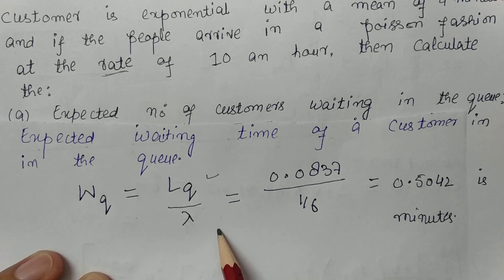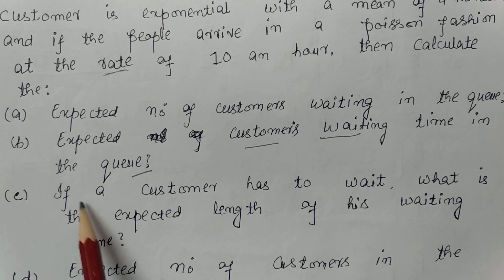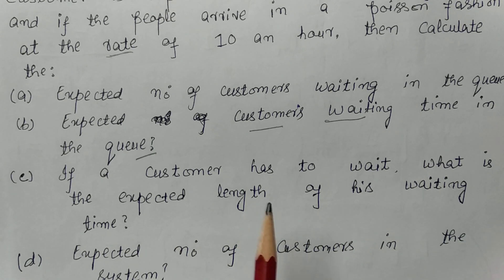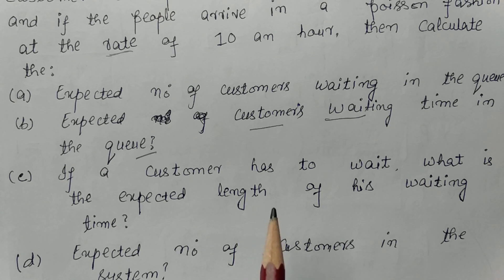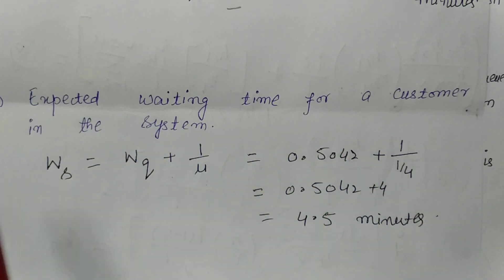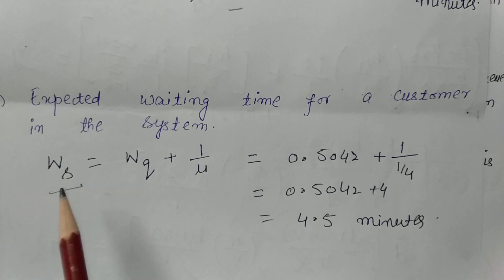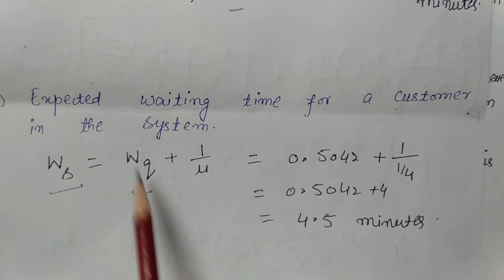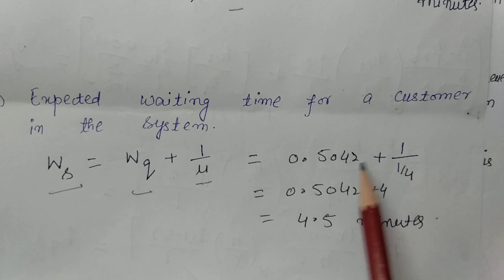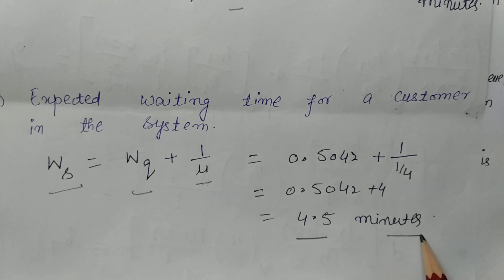Next part: if a customer has to wait, what is the expected length of his waiting time? This means we find the expected waiting time in the system. W equals Wq plus 1/μ equals 0.5042 plus 1/(1/4) equals 0.5042 plus 4, giving W equals 4.5042 ≈ 4.5 minutes. A customer will wait 4.5 minutes in the system.